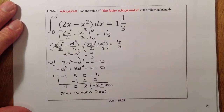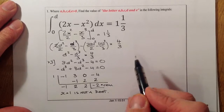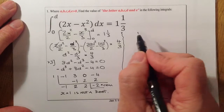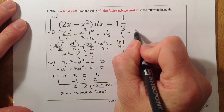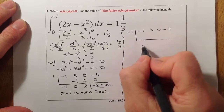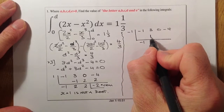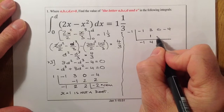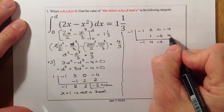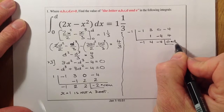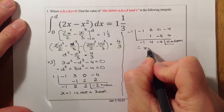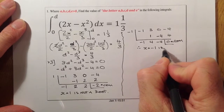Let's try minus 1. Using the same values: minus 1, 3, 0, minus 4. Bring minus 1 down, gives 1, gather together: 4. That gives minus 4 here. Gathering together: minus 4. Minus 1 times minus 4 gives 4, and that equals 0 — that's my remainder. So x equals minus 1 is a root, and therefore x plus 1 is a factor.